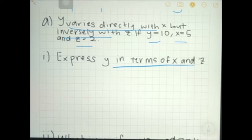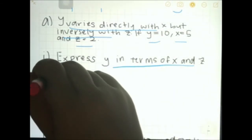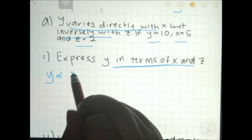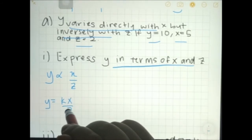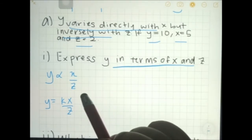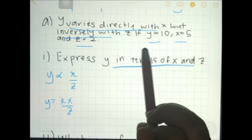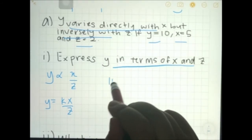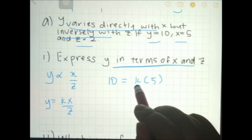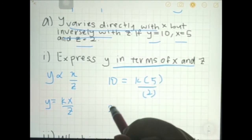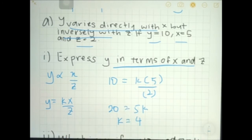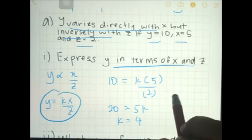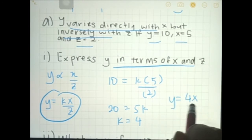The first thing we have to do is find k. Write down the information: y varies directly with x and inversely with z, so in equation form y equals kx over z. Substitute the given values — y is 10, x is 5, z is 2 — so 10 equals k times 5 over 2, giving 20 equals 5k, so k equals 4. Substitute k back into the equation: the final answer is y equals 4x over z.